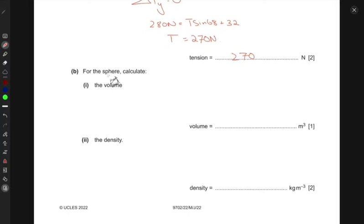For the next part, for the sphere calculate its volume. So we want to calculate the volume of the sphere. We know that the upthrust force, let's call it F, is given by the product of the density times the acceleration due to gravity times the volume in which it is submerged.